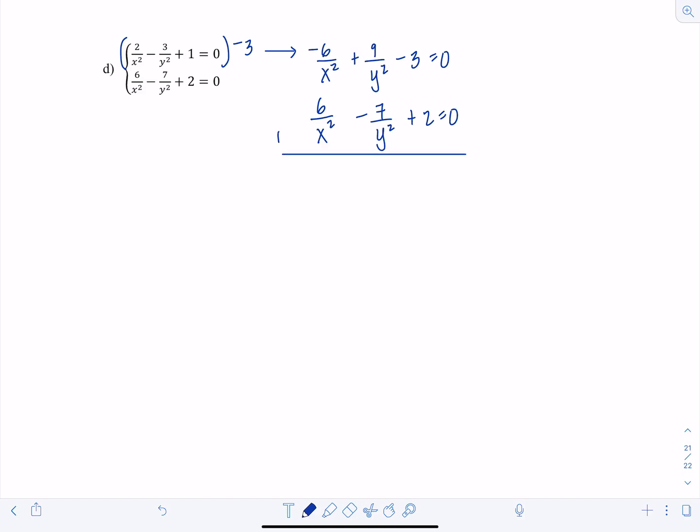And then I have 6 over x squared minus 7 over y squared plus 2 equals 0. So now I'm going to add them together. And then notice the 6 over x squared and negative 6 over x squared cancel out. So I'm left with 2 over y squared minus 1 equals 0, which means 2 over y squared equals 1. So y squared equals 2. So y equals plus or minus root 2.